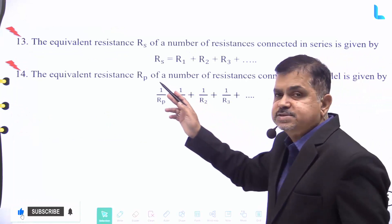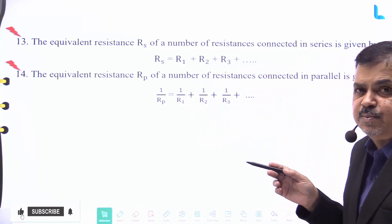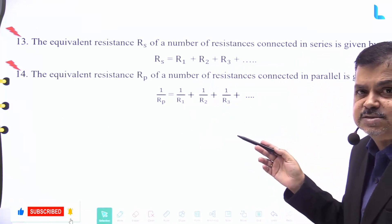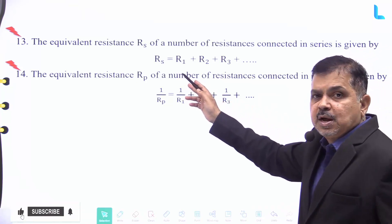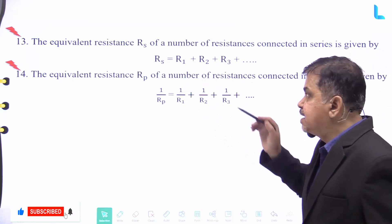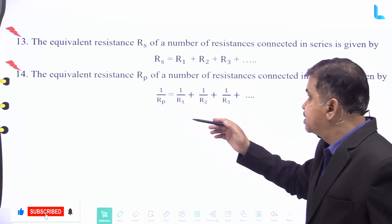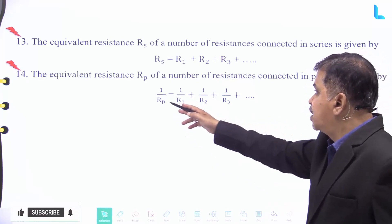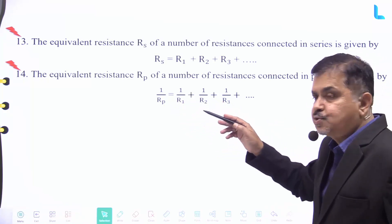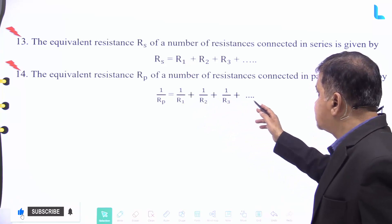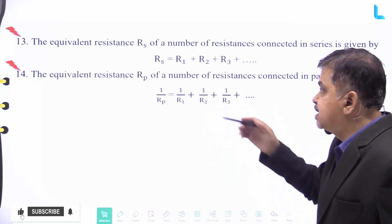The equivalent resistance when connected in series is given by R_s equal to R₁ + R₂ + R₃ and so on. When connected in parallel, the equivalent resistance is given by 1/R_p equal to 1/R₁ + 1/R₂ + 1/R₃ and so on.